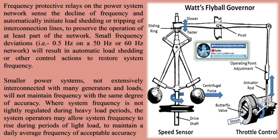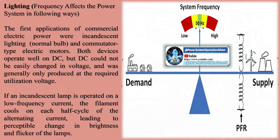Even today, although commutator type universal motors are common in 50 Hz and 60 Hz household appliances, they are small motors, less than 1 kW. The induction motor was found to work well on frequencies around 50 to 60 Hz, but with the materials available in the 1890s would not work well at a frequency of, say, 133 Hz.